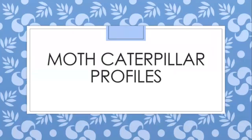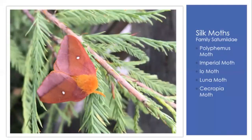Now we're going to look at some moth caterpillars, starting with the silk moths — five different species. Silk moths pupate in tough silken cocoons and do not feed as adults, so to support them you only need to provide a host plant. The one pictured here is a pink-striped oakworm moth — not super common, but I found one and thought it looked beautiful.